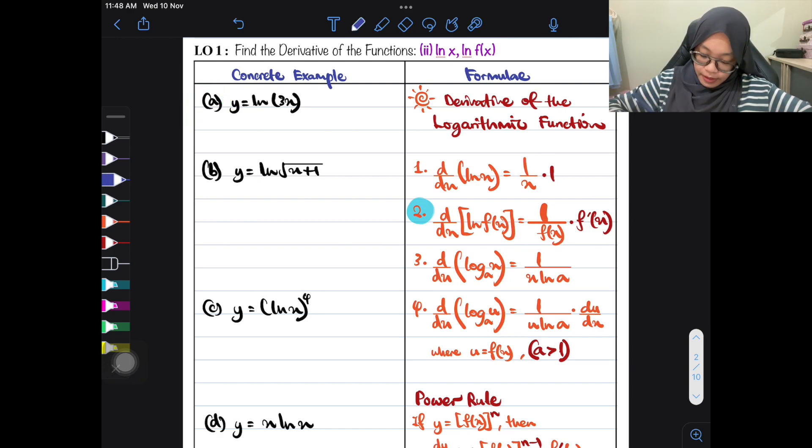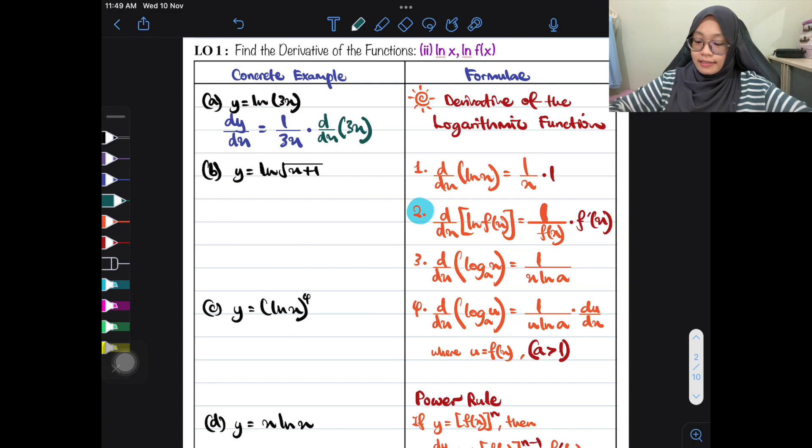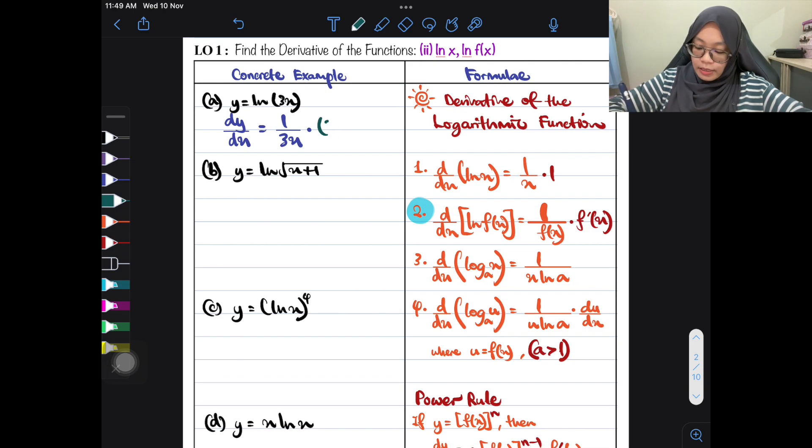Let's go to the first example. The first example here is y equals ln 3x. So when we differentiate it, we will get dy by dx equals 1 over whatever function inside of the ln. So here is 1 over 3x. But you must not forget times it with derivative. Times it with differentiate 3x. Differentiate 3x is just 3. And then you solve it.